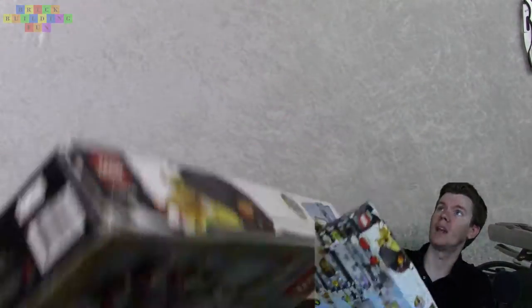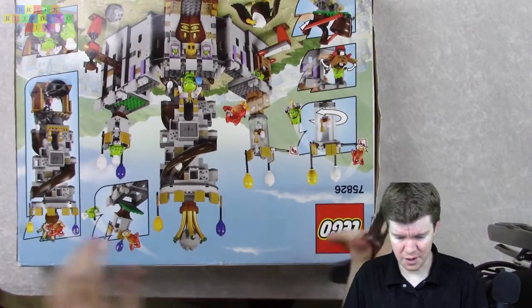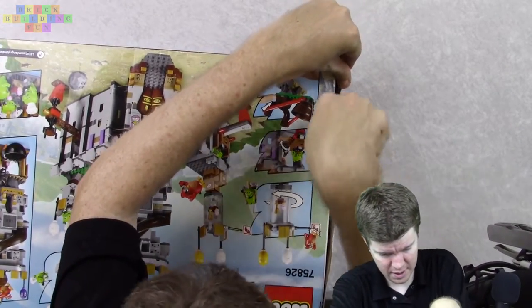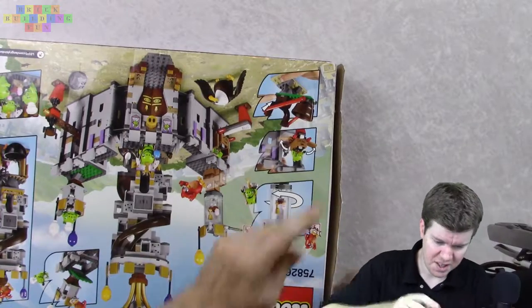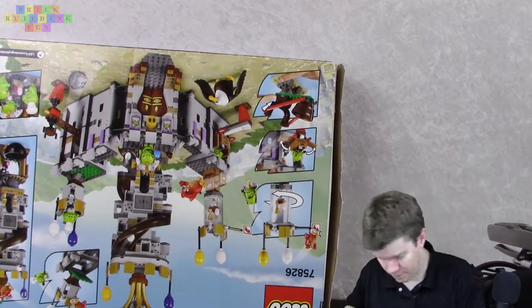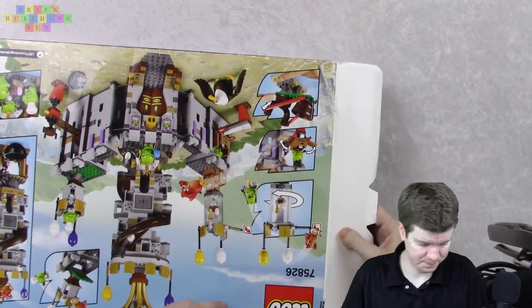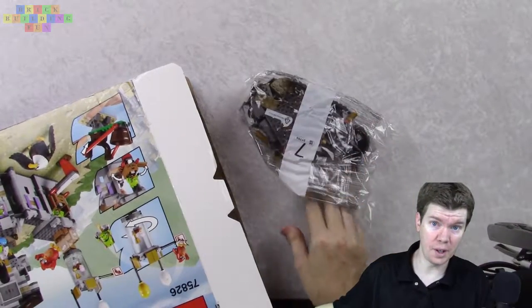So actually, let's open this up first. Let's do the unboxing. Then we can be sure that it has everything that it's supposed to have in it. But yeah, the tape is the original Lego tape. It's got the little black stuff on it. So it's just a bit of box damage. Did I mention it was only $40?